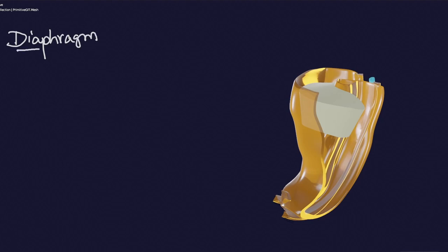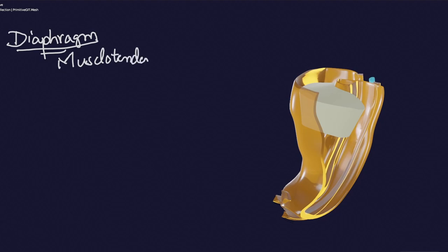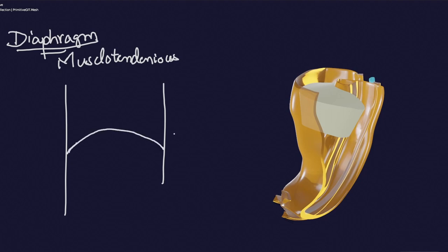What is the diaphragm? Basically, the diaphragm is a musculotendinous dome-shaped structure. It consists of a muscular part as well as a tendinous part — muscle as well as tendon. In the central area there is the tendinous part called the central tendon, and at the periphery is the muscular part of this dome-shaped structure.